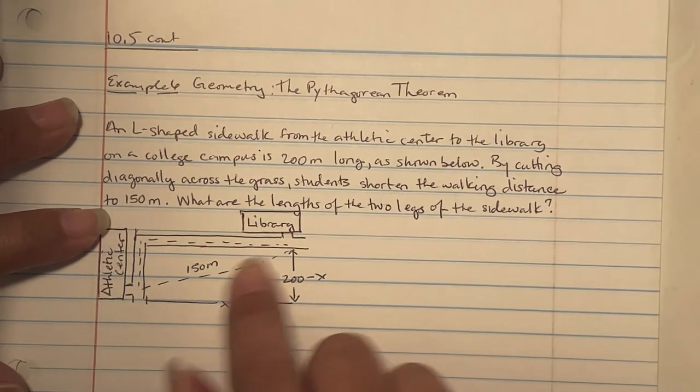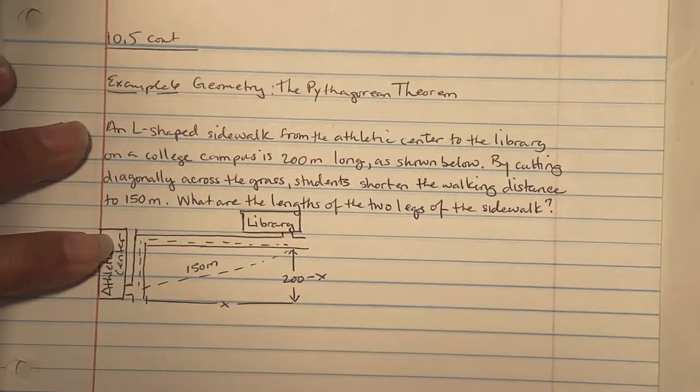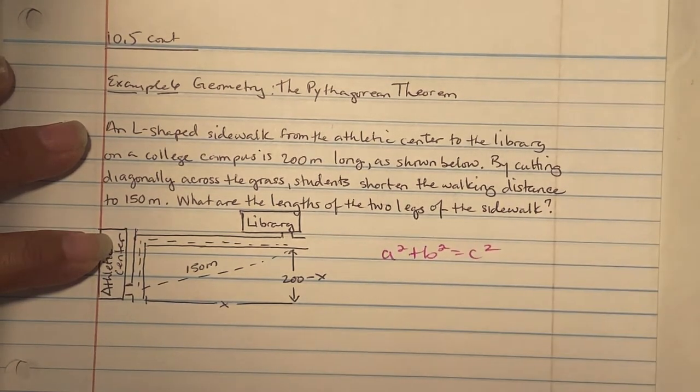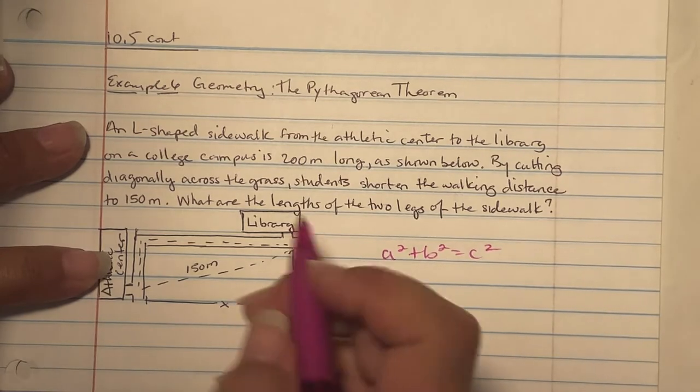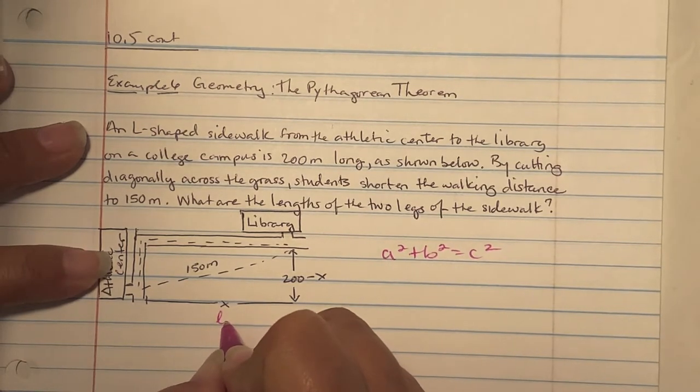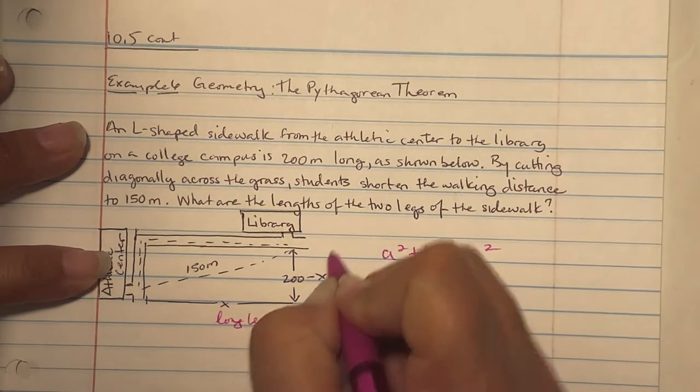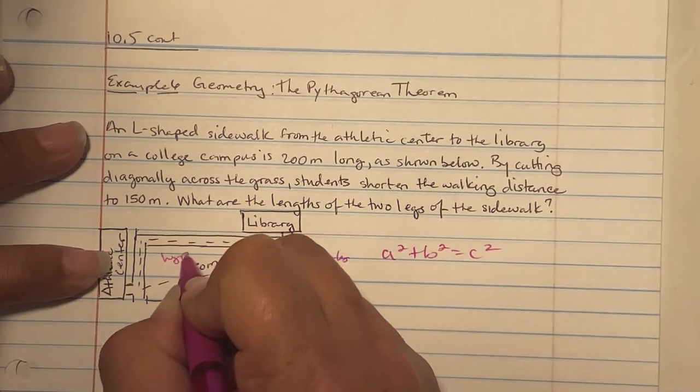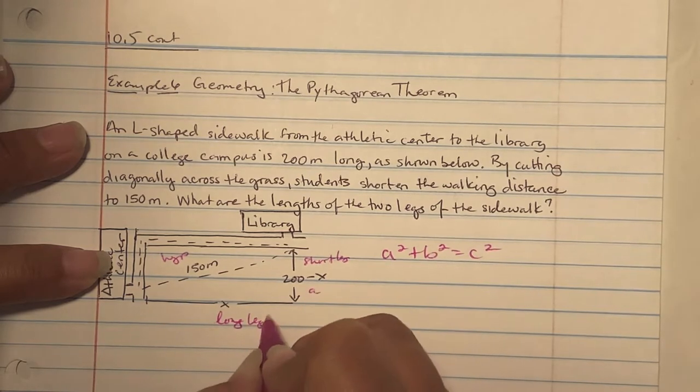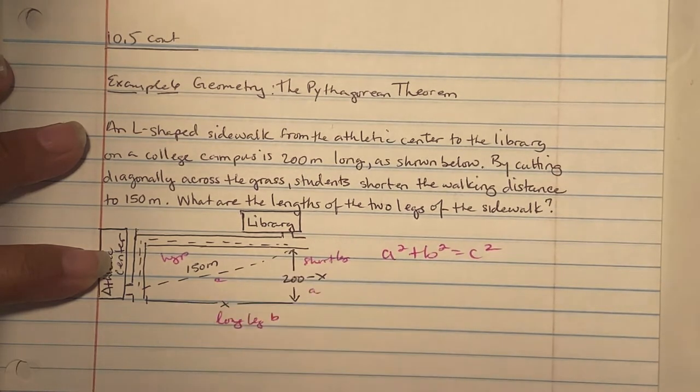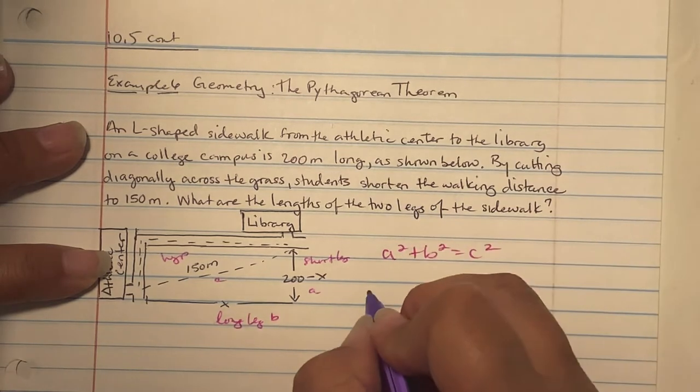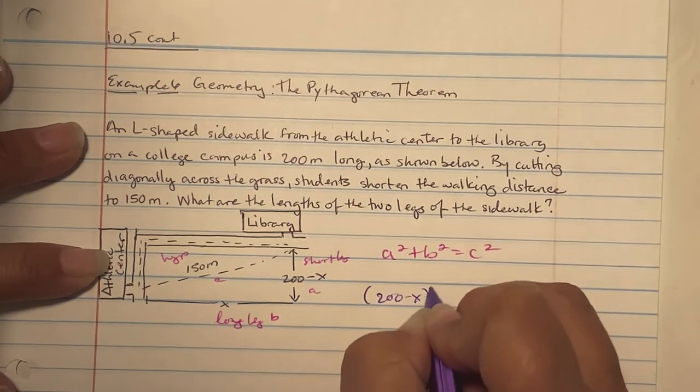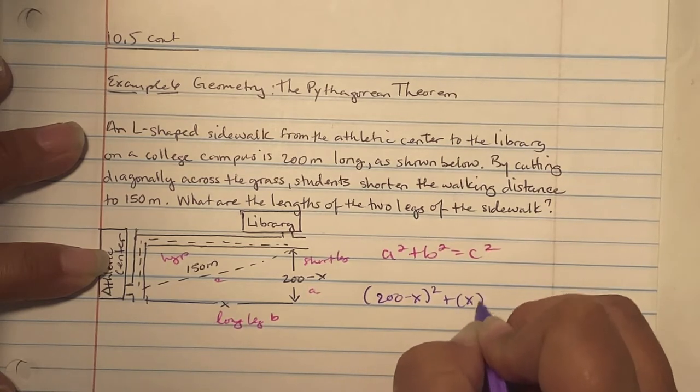First thing, Pythagorean theorem. Remember, A squared plus B squared equals C squared. We already know this is the long leg, here's your short leg, and here's the hypotenuse. So this is my A, B, and C. We're going to plug in.